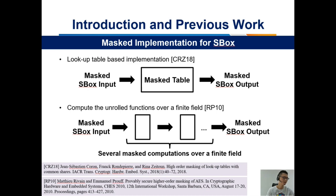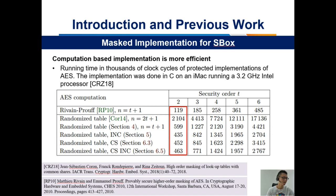There are mainly two ways with acceptable costs to solve this problem. The first one is lookup table-based implementation, where a masked table is generated. The second one is to compute the arrow functions over a finite field, where the S-Box is achieved by several masked computations over a finite field. According to a performance comparison table for AES, the lookup table-based solution costs at least four times more than the computation-based one. Thus, in this paper, we focus on the computation-based implementations.